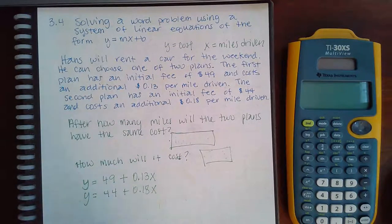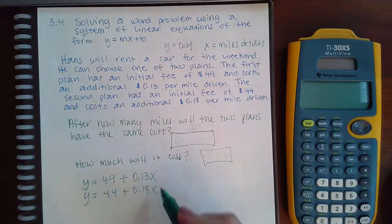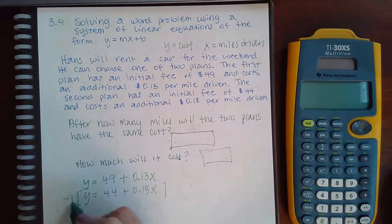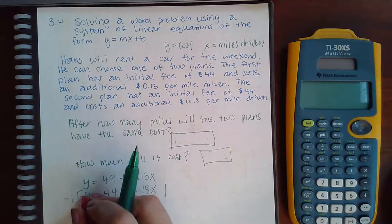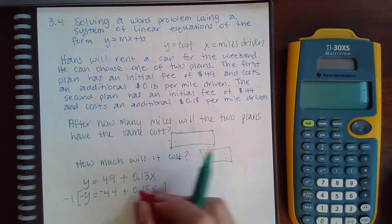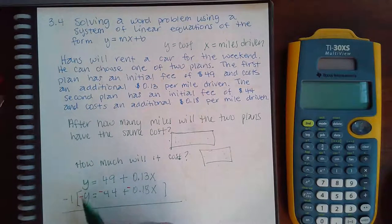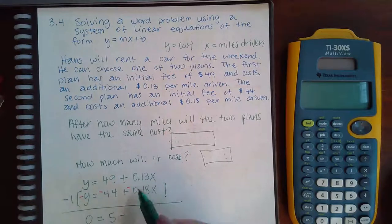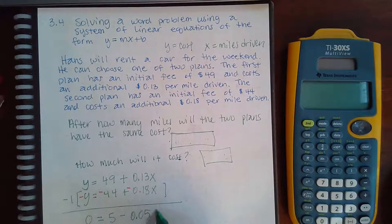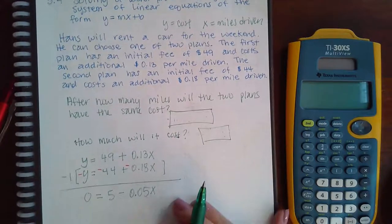So then I've got to solve this system of equations. Now I can solve it by multiplying this whole equation by negative one. When I do that, this will become negative y, negative 44, and negative 0.18x. So then when I add them together, this will cancel leaving me zero. I will have 5 minus 0.05x and then I can continue to solve this for x.